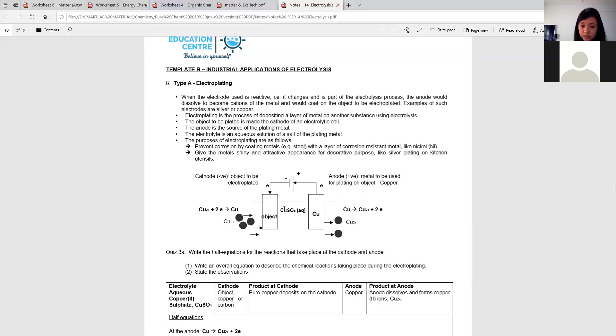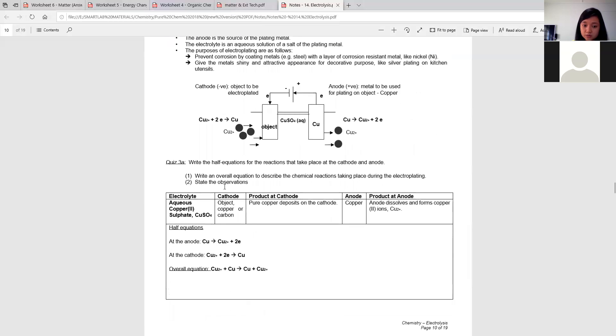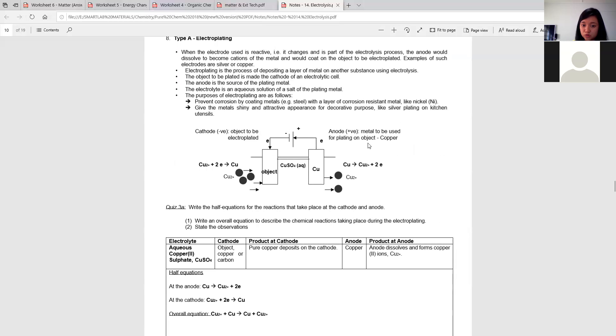So meaning if I'm going to electroplate something, the object must always be at the cathode, this one confirmed, because the object you don't want it to break down, it will never ever go through reduction. Because metal will not go through reduction, whereas the metal that you want to put over there, you must put it at anode, because you want it to go through oxidation to break down, to be attracted to the other side. So this is the whole thing about electroplating.